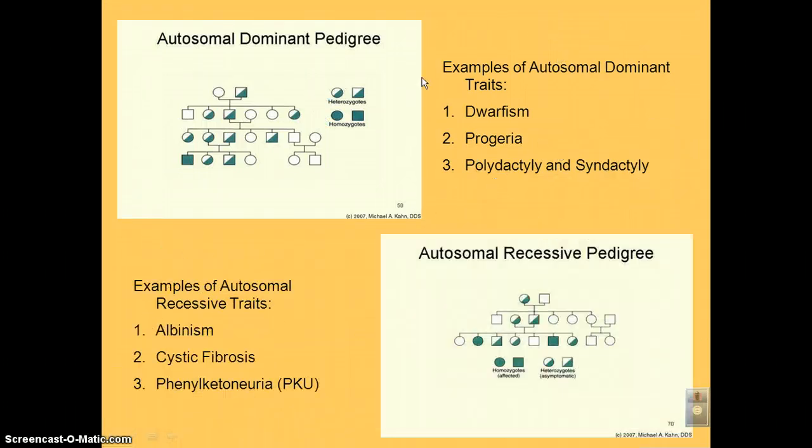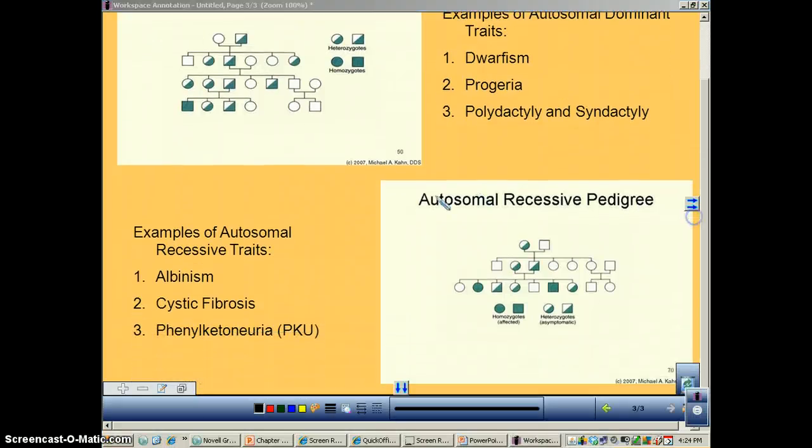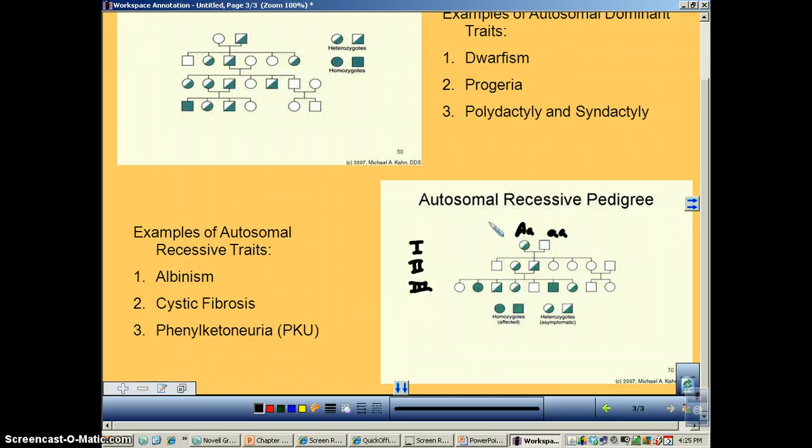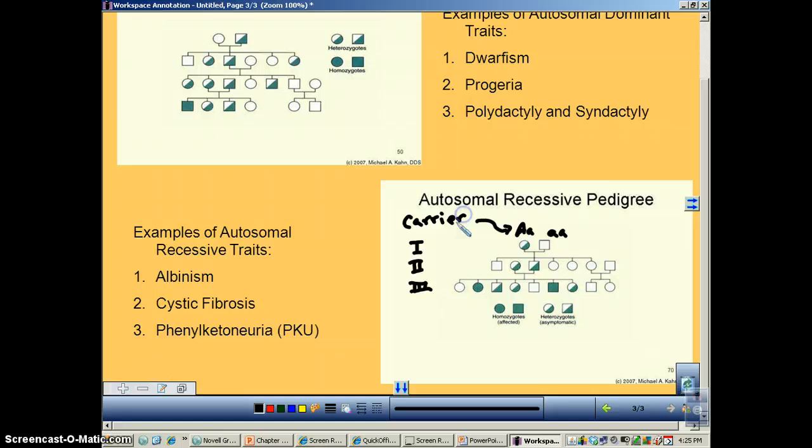So what if we have a recessive trait? So what we got here, we've got generation one, there's generation two, and we have a generation three. Now, in this case, you have to be homozygous to get this. So let's look up here. This individual, this is heterozygous, and this person here doesn't show it, so they're that. This person here does not show the disease, but heterozygous individuals, when it's recessive, are called a carrier. They carry a disease, and they can pass it on to the next generation.